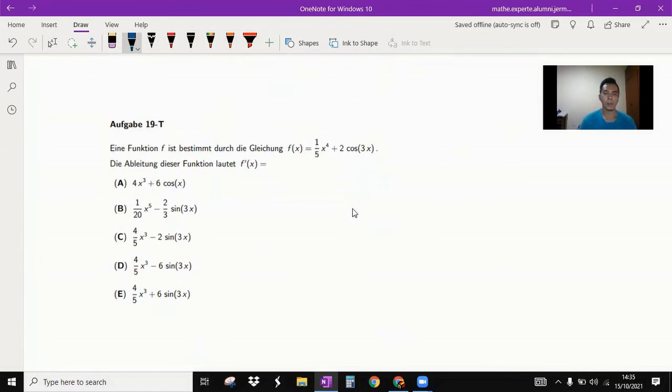The next question number 19 is how to derive this function. Let's take a look at this function. You have two terms. The first term is one over five times x to the power of four. So if you derive this one, it's going to be four over five x to the power of three.